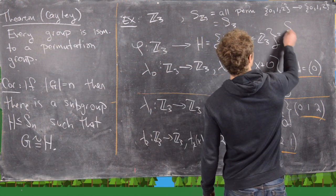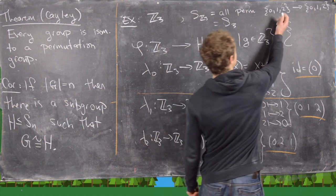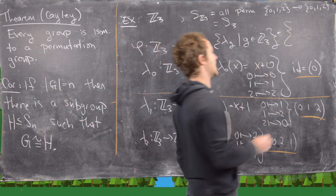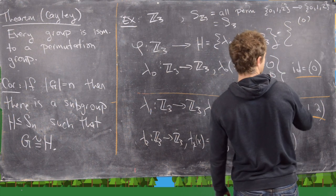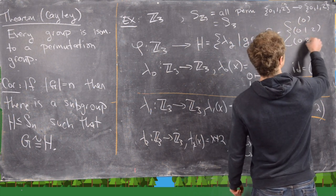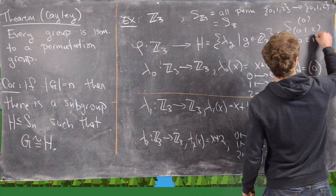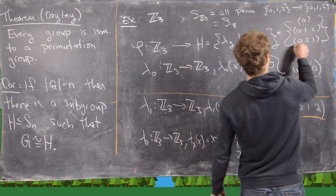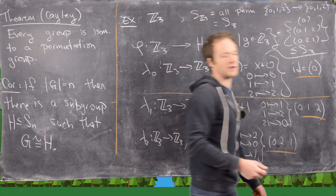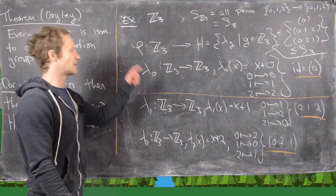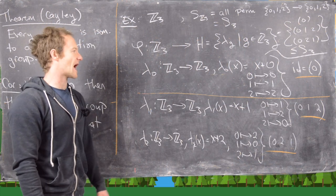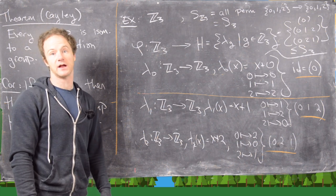So here we get that H equals the following group of permutations: the identity (which we call e), (0 1 2), and (0 2 1). Notice that is a subgroup of S₃. This is a good place to end the video — we'll look at another bigger example in another video.